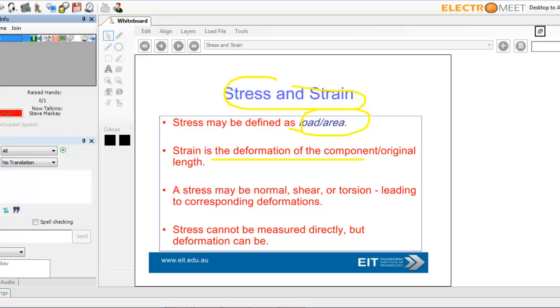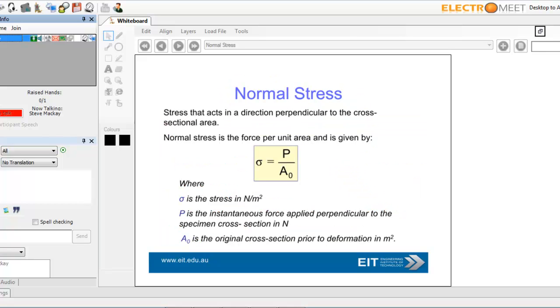You have concepts of stress and strain here. Stress may be defined as load over area. Strain is the deformation of the component over the original length. It could be normal, shear or torsion. Torsion is a twisting action. Stress can't be measured directly, but deformation can be.